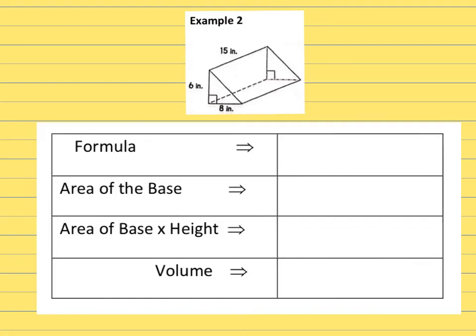The second example is the triangular prism. Okay, it starts out the exact same way. The formula is V equals capital BH.